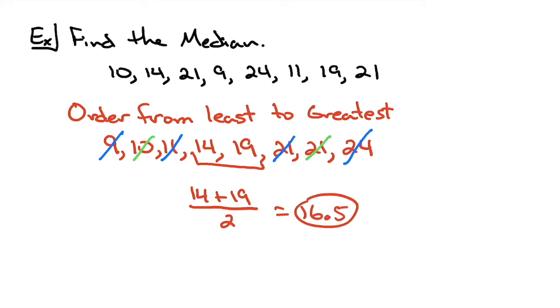So your median number, when you start crossing them off, there is either going to be exactly one number left in the middle when you are done, in which case that's your median, or you'll cross them off and end up with two numbers there in the middle. All you have to do is average those, add them up, divide by two.